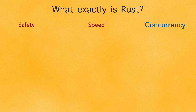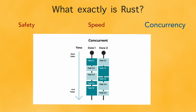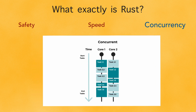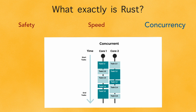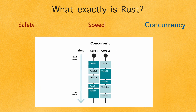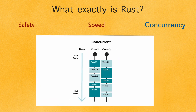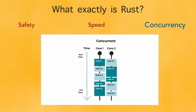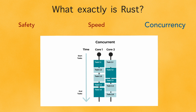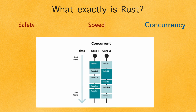Lastly, concurrency. Rust makes it much easier to write multi-threaded code. Thanks to its strong memory model, Rust helps prevent data races, making it one of the best languages for safe concurrent programming.